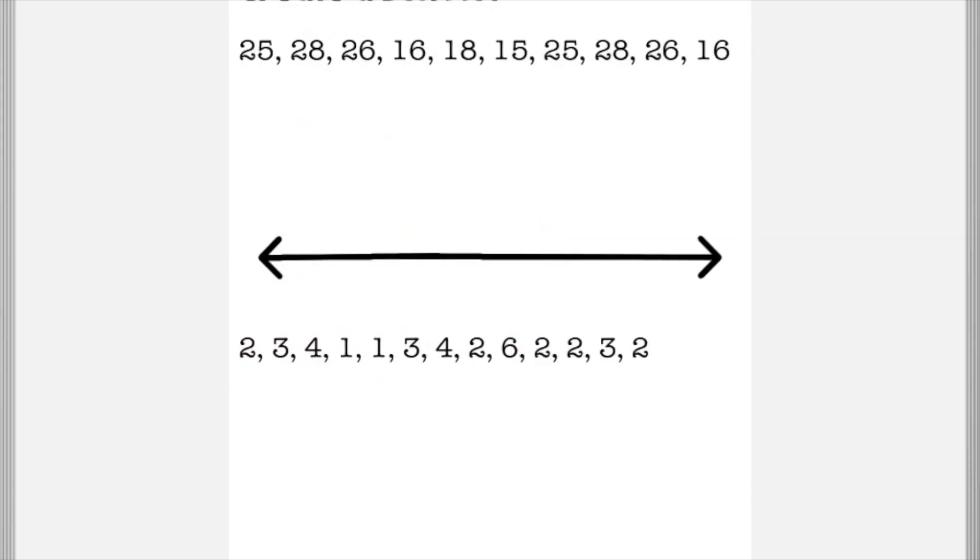In this section, it's asking us to create a box plot. First you need to make a number line and I don't like to number my number line until I actually calculate the data. The first thing you always want to start with is the median. We're going to put these in order from least to greatest, making sure we have all the numbers. I like to cross them out to make sure I have all of them.